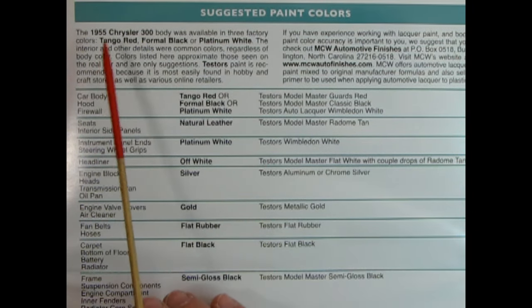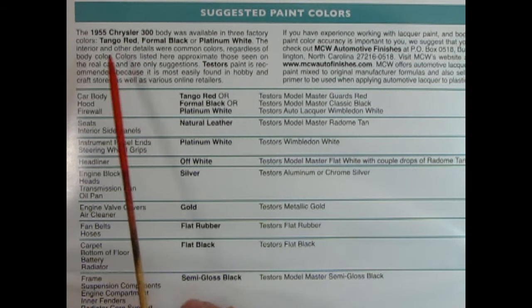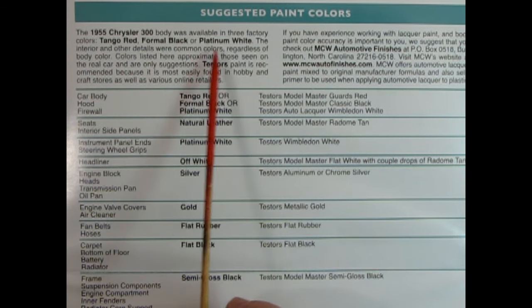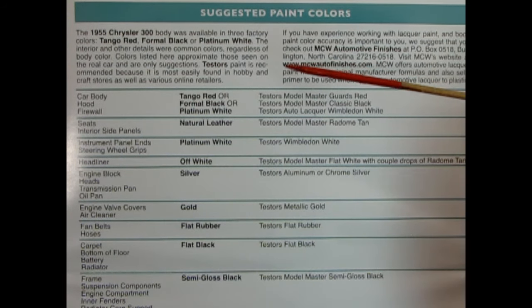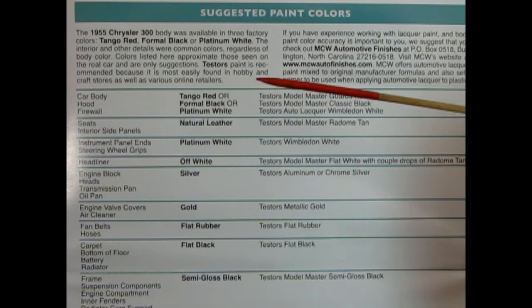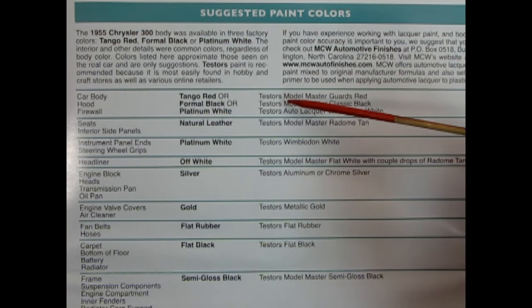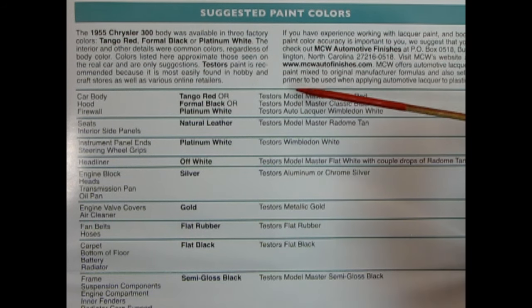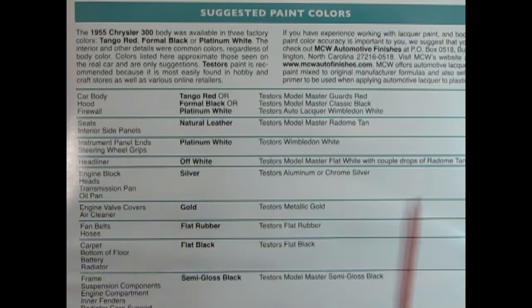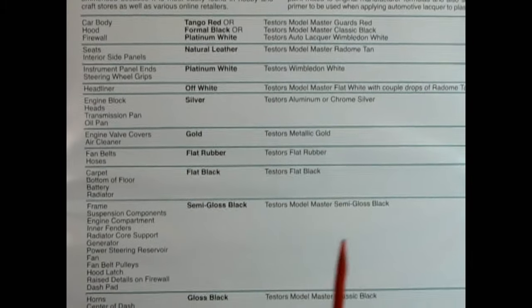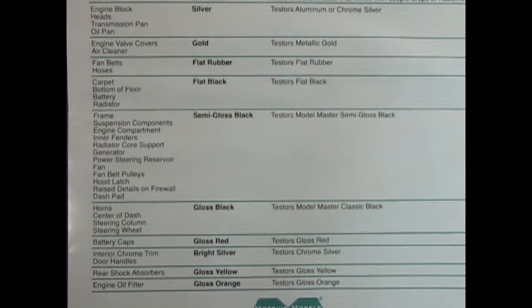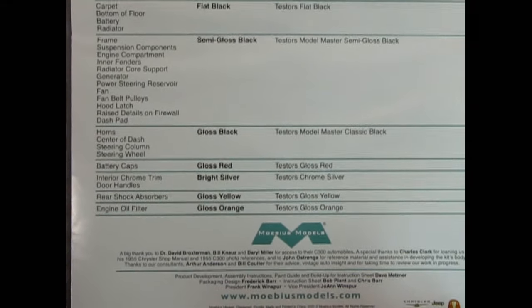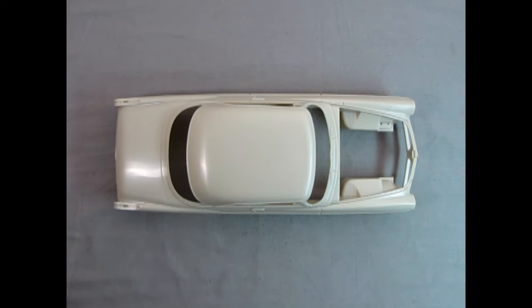Finally on the back of the instruction sheet, we have the suggested paint colors. It says the 55 Chrysler 300 body was available in three factory colors: Tango red, Formal black, or platinum white. So obviously the color of this model is platinum white. There's all the different colors. Testers model master guards red, Testers model master classic black, or Testers auto lacquer Wimbledon white. Now model master has been discontinued sadly, but you can find these colors elsewhere. This whole instruction sheet calls out for Testers paints. So those of you that love Testers will be able to use your favorite model paint on this great kit.